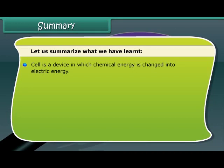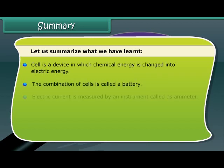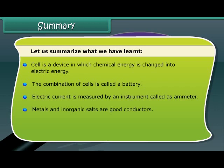A cell is a device in which chemical energy is changed into electric energy. The combination of cells is called a battery. Electric current is measured by an instrument called as ammeter. Metals and inorganic salts are good conductors. Non-metals and organic compounds are insulators.